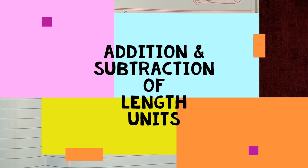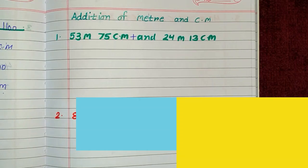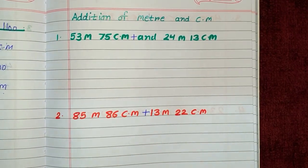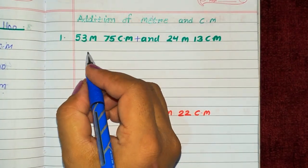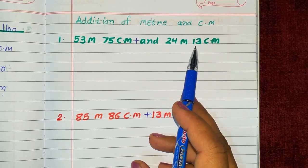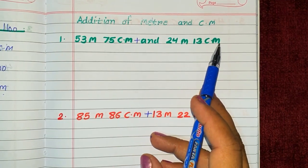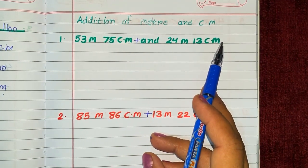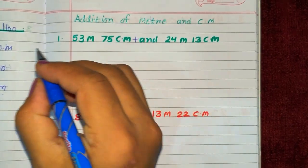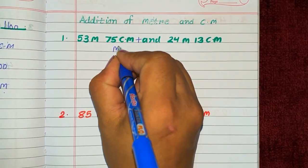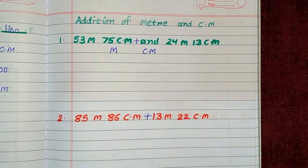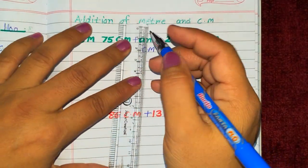Hello everyone, this is Megha. Today we will learn addition of meter and centimeter, or addition of length. To arrange meter and centimeter in a column, as I will show you, first we write meter, then we write centimeter, and then draw a line.